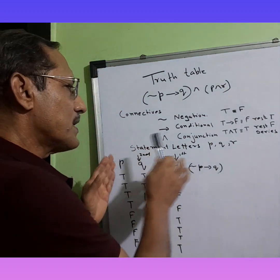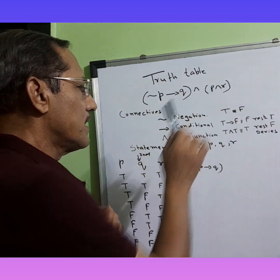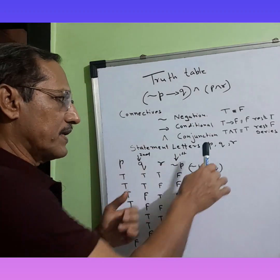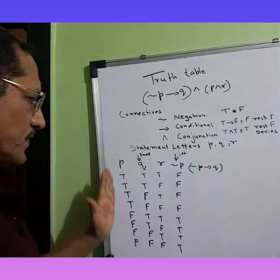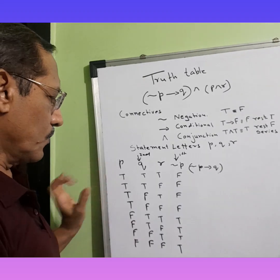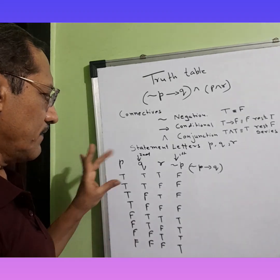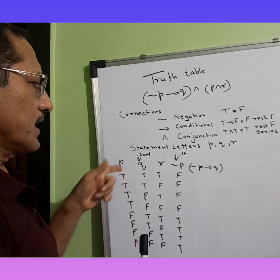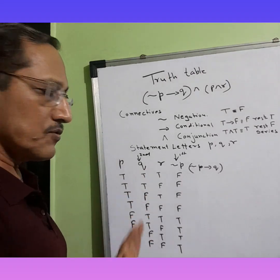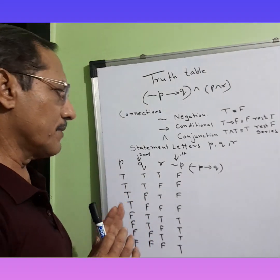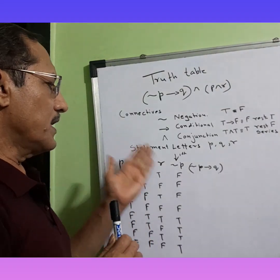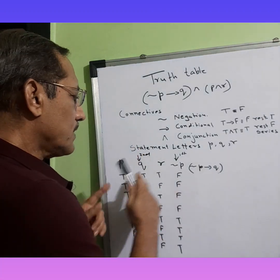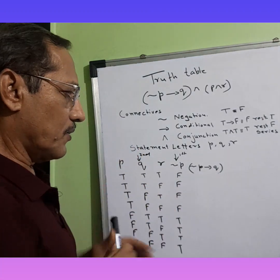The statement letters given are p, q, and r — three letters. Whenever there are three statements, we have 4 T's and 4 F's for p, then 2 T's and 2 F's alternating for q, then T F T F and so on for r. For negation p, it is simply the opposite of p.